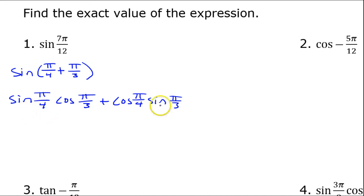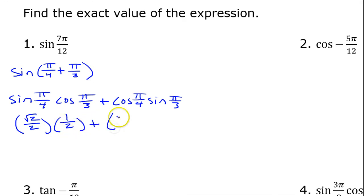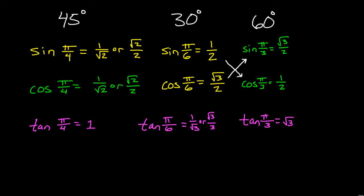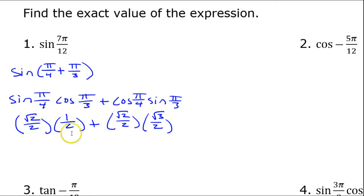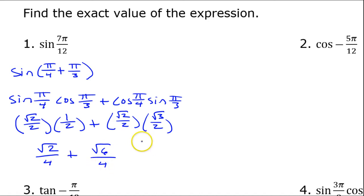I'm just going to evaluate each one of these parts. We have memorized that sine(π/4) is √2/2, cosine(π/3) is 1/2, cosine(π/4) is √2/2, and sine(π/3) is √3/2. I got all of those facts off the chart that we have memorized. Simplifying this expression down, I have √2/4 plus √6/4.